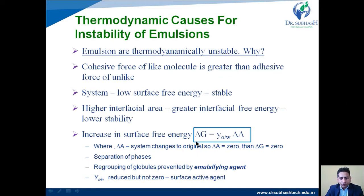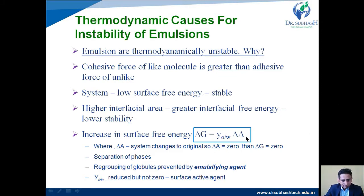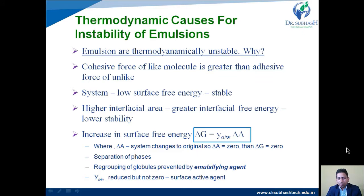The surface free energy equation is: ΔG = γ(o/w) × ΔA, where ΔA is the change in interfacial surface area of globules and γ(o/w) is the interfacial tension between oil and water. Decreasing surface area reduces surface free energy and gives a more stable emulsion. However, ΔA cannot become zero, so ΔG also cannot become zero, meaning the emulsion remains inherently unstable and phases will tend to separate.